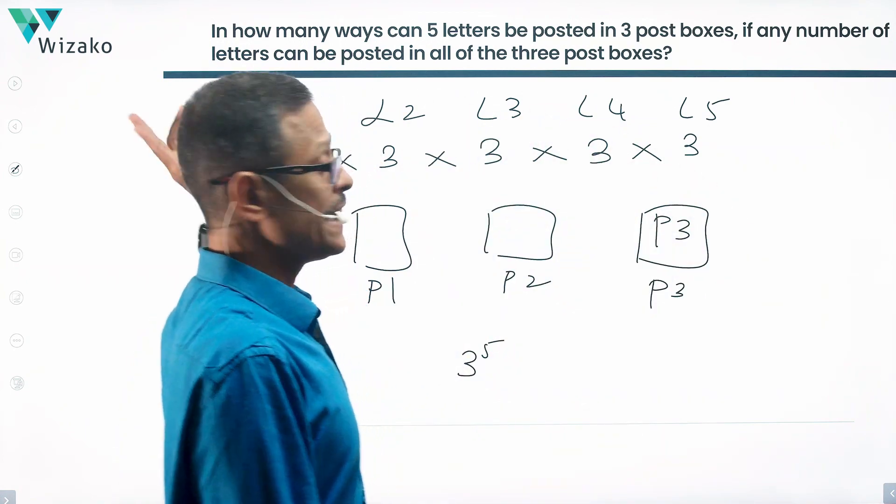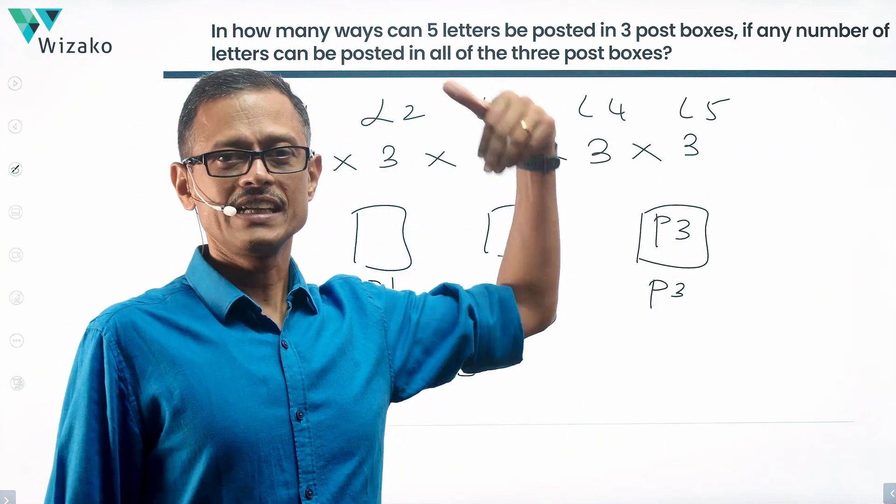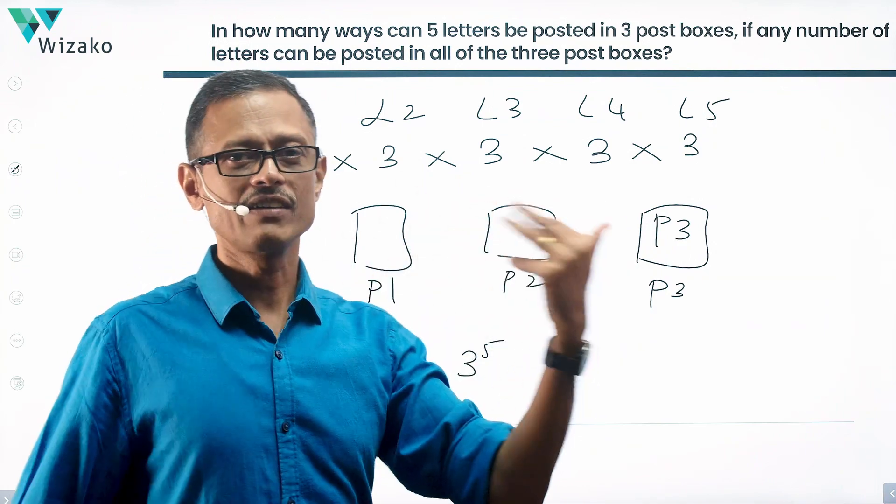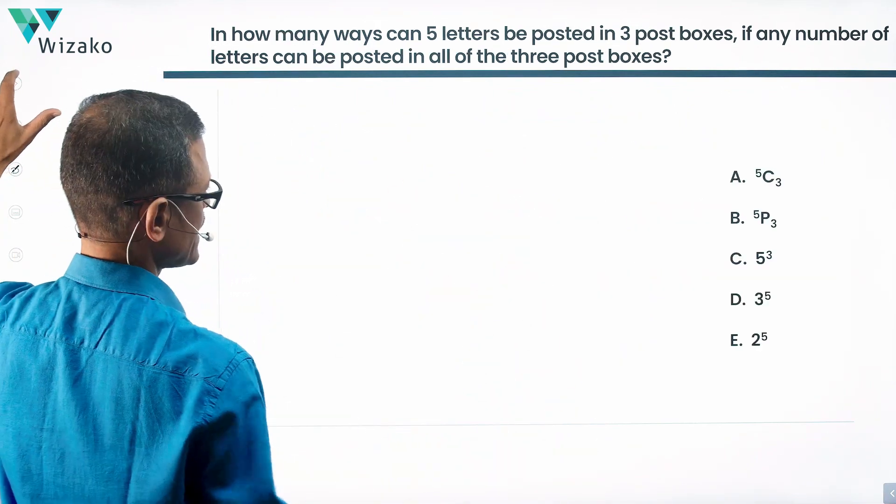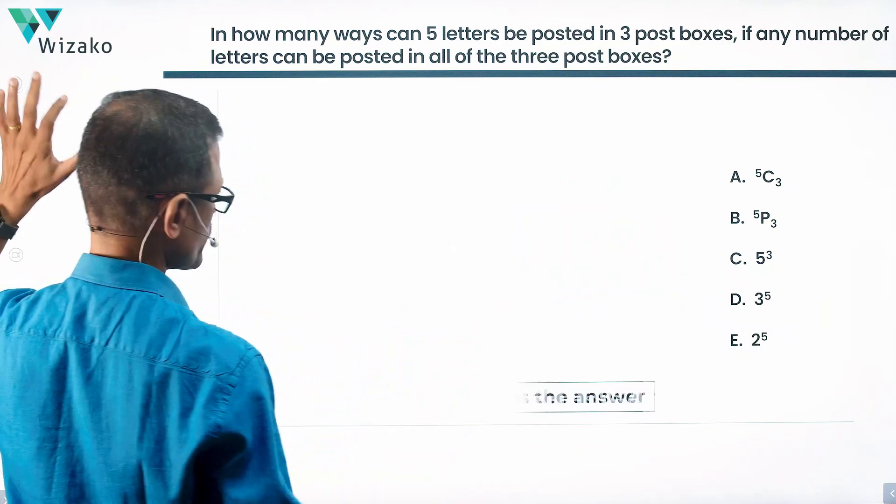If any number of letters can be posted into all of these boxes. Each of these boxes can take all the five letters if required, or even much more than that. Three raised to the power of five is the correct answer. Choice D is the answer to this question.